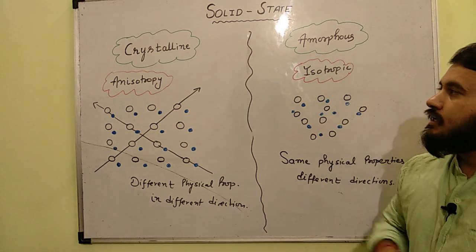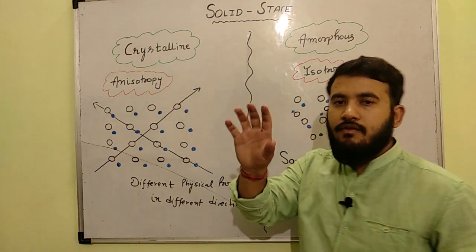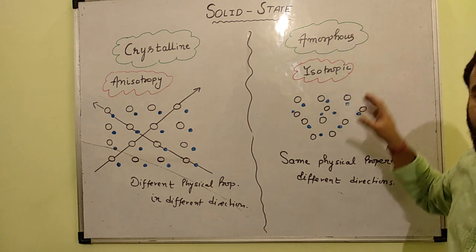So we can say that crystalline solids are anisotropic in nature. However, the amorphous solids are isotropic in nature.